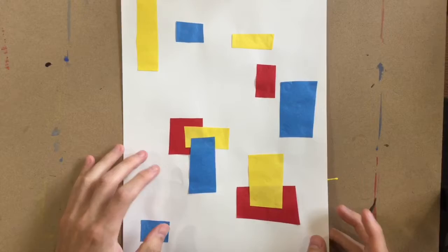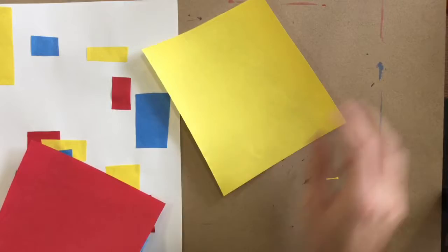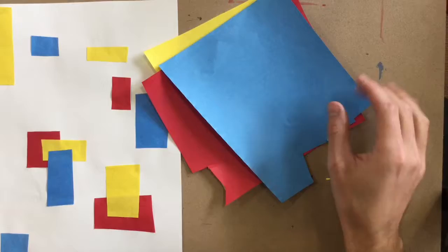Hey Kindergarten. Today you're going to get back your Piet Mondrian artwork that we started last time, and off of the supply table you need to get one sheet of yellow, one sheet of red, and one sheet of blue just like we did last class.